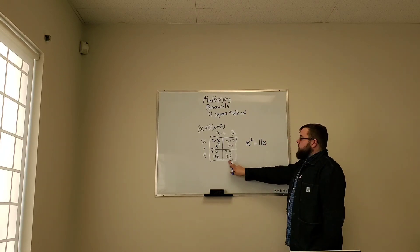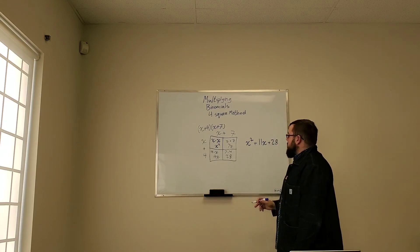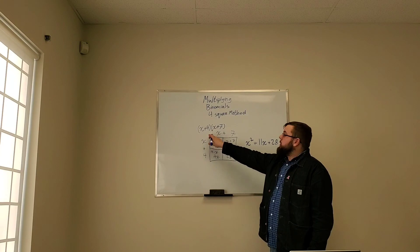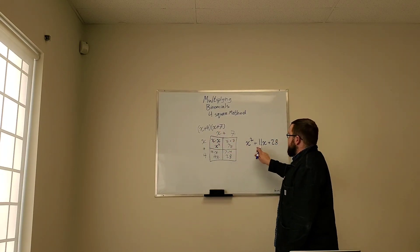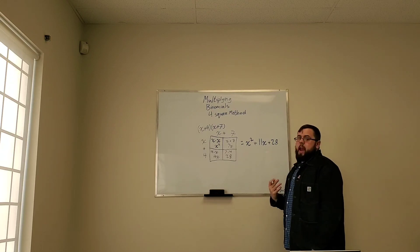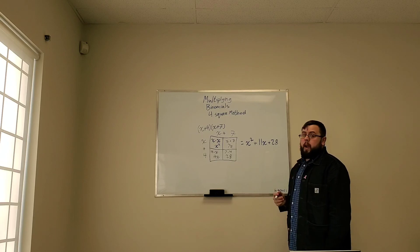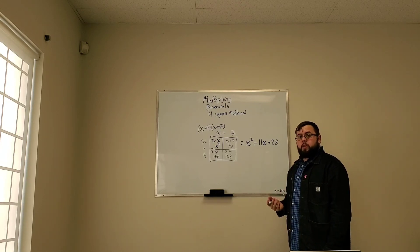And then finally, we have 28. And that's all by itself as well. So x plus 4 times x plus 7 is x squared plus 11x plus 28. And that's how to multiply binomials using the four-square method.